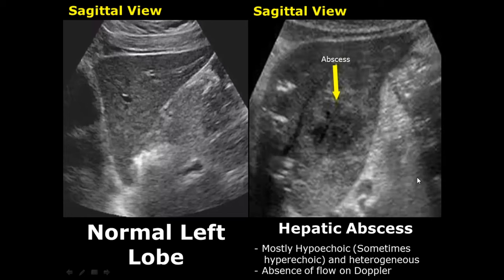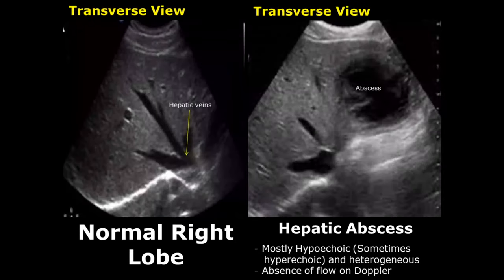An abscess can have variable appearances. Mostly it is hypoechoic, but depending on its density it can be hyperechoic. It is also heterogeneous, but the main feature is that it will have no flow on Doppler, which can distinguish it from other masses.